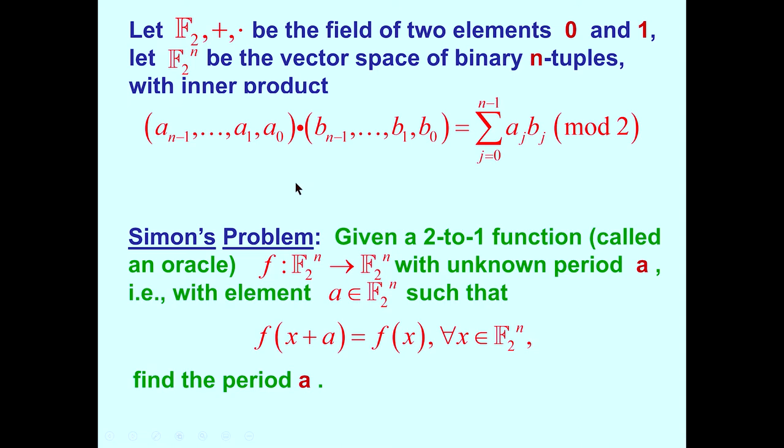As a preamble to Simon's algorithm, let Blackboard F sub 2 be the field of two elements, 0 and 1, and let F2 super N be the vector space of binary n-tuples with inner product defined as inner product mod 2. Simon's problem is the following. Given a two-to-one function called an oracle, F from all n-bit strings into all n-bit strings with unknown period A, with an unknown element A which satisfies the condition so shown, find the period A. This is Simon's problem.